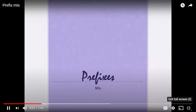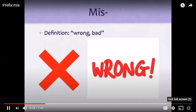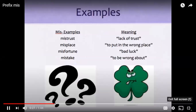The definition for the prefix 'mis' is wrong or bad. A few examples: mistrust, which is a lack of trust; misplace, which is to put in the wrong place; misfortune, which is bad luck; and mistake, which is to be wrong about something.